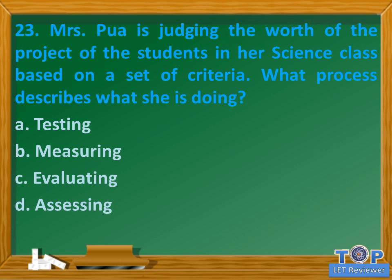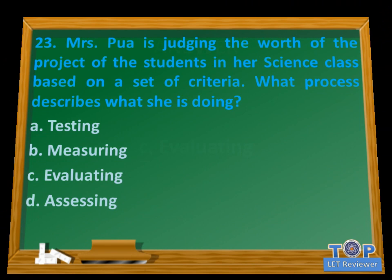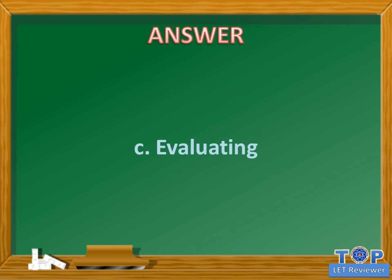Question number twenty-three: Mrs. Pua is judging the worth of the project of the students in her science class based on a set of criteria. What process describes what she is doing? A. Testing, B. Measuring, C. Evaluating, D. Assessing. Answer: C. Evaluating.